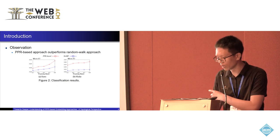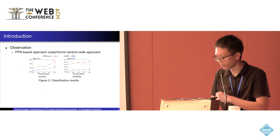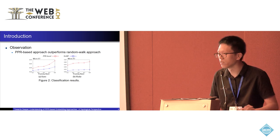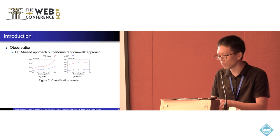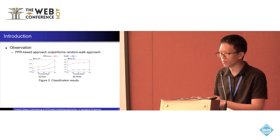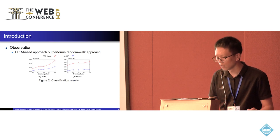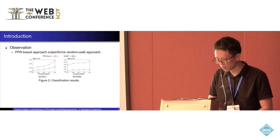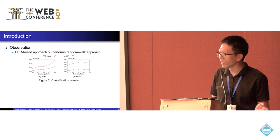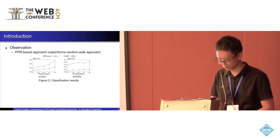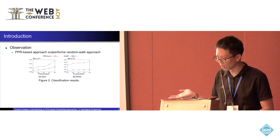Here we show an example on the classification task. The red one — the PPR-based embedding approach — achieves better results compared to the blue one, the random walk-based approach. Similar results for link prediction and classification are shown in recent research studies. But why? Nobody has answered the question of why PPR-based embeddings outperform random walk-based embeddings. So we want to fill this research gap.